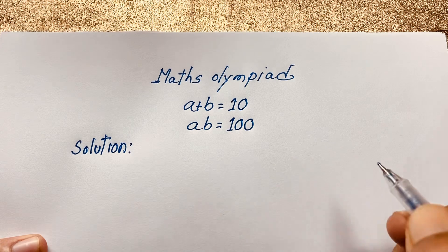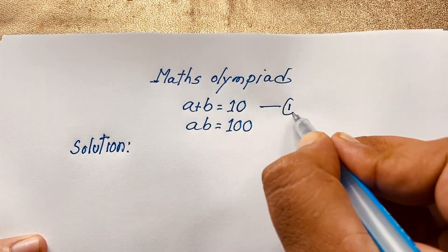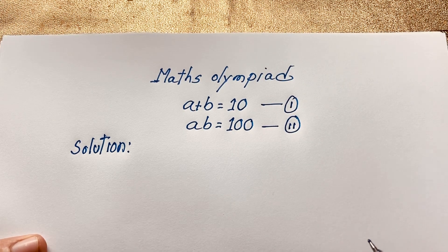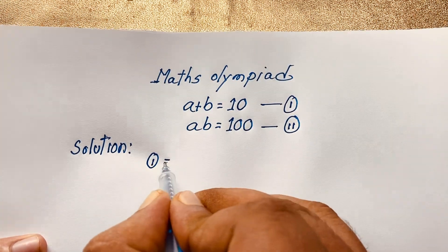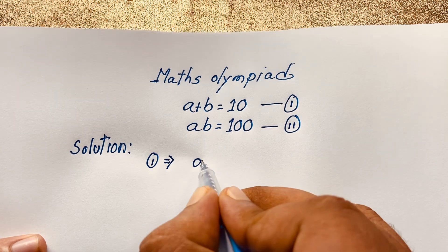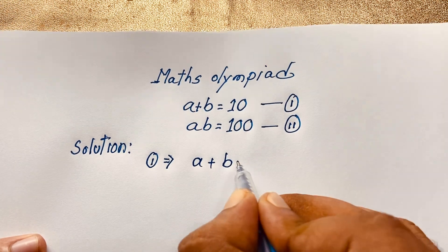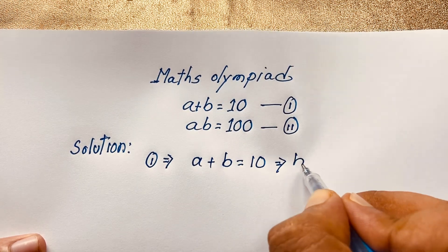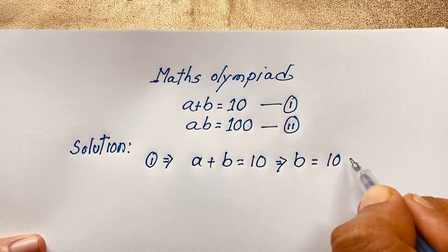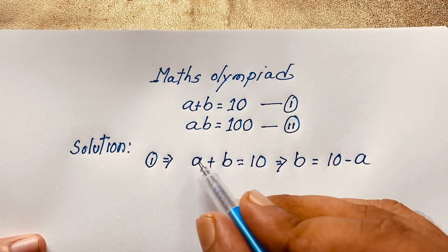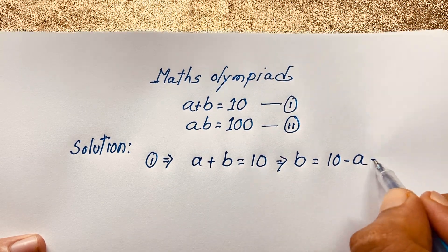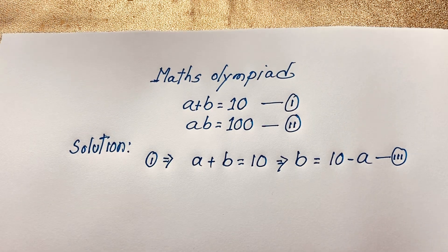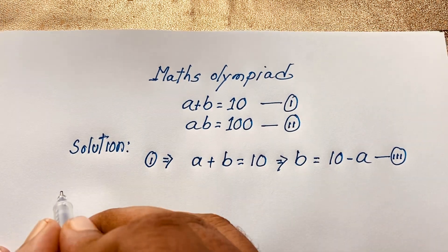First of all, you can see easily this is our first equation and this is our second equation. According to the first equation, a plus b is equal to 10, so b is equal to 10 minus a. I just moved a to the other side — it will be negative a. This is our third equation.